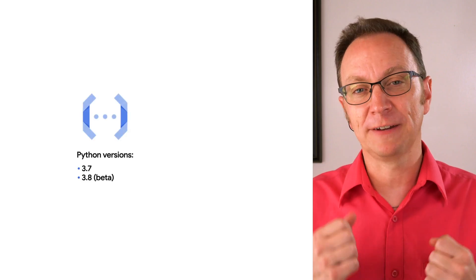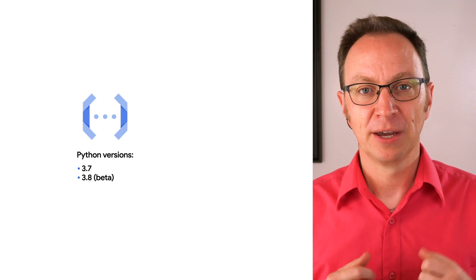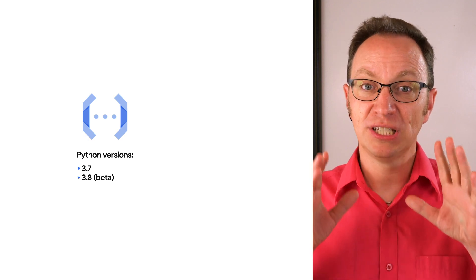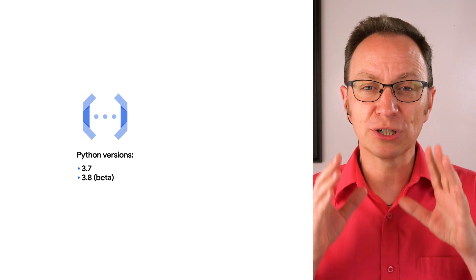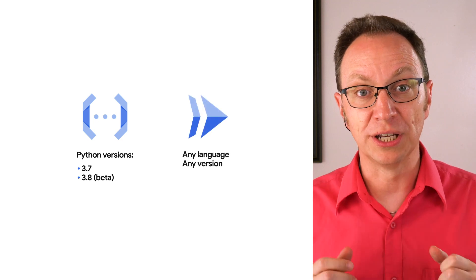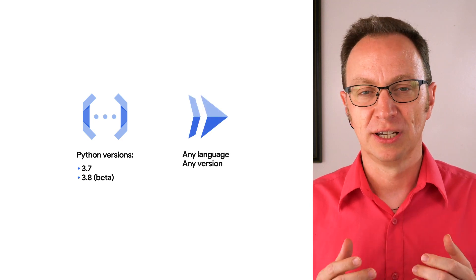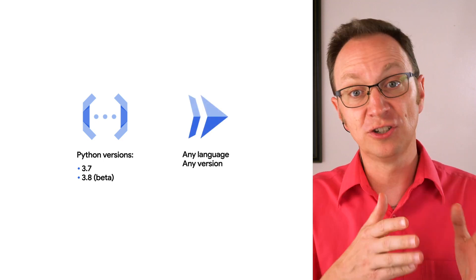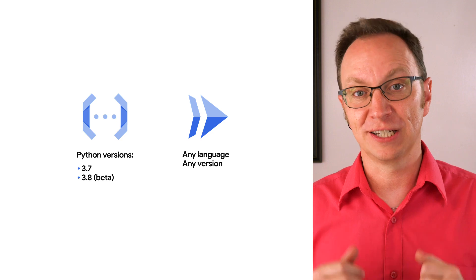Looking at the options available on Google Cloud, Liz sees that while she could deploy on Cloud Functions, she would be forced to use only specific versions of Python. However, she sees that the newest serverless offering from Google Cloud, Cloud Run, doesn't have this limitation, so she chooses to deploy there instead.